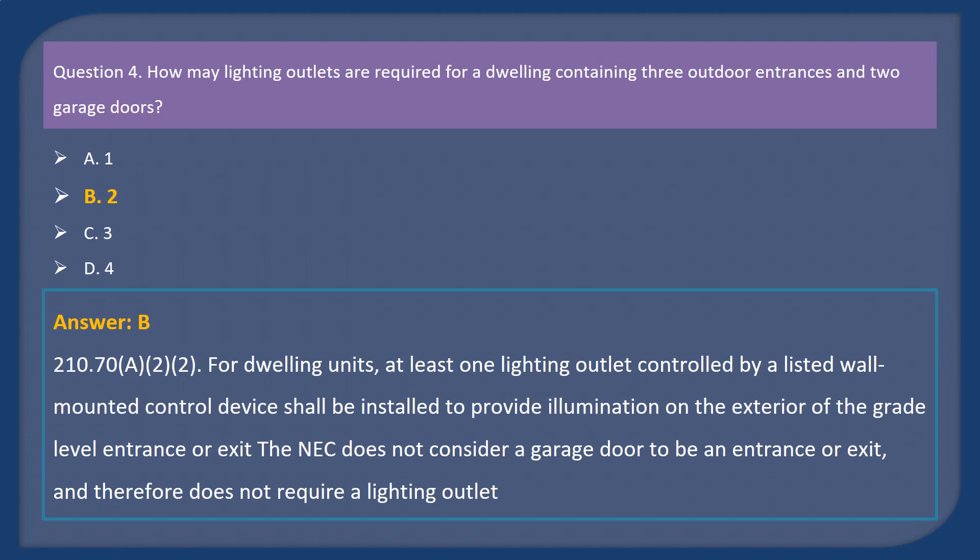Answer: B. Explanation. 210.70A2. For dwelling units, at least one lighting outlet controlled by a listed wall-mounted control device shall be installed to provide illumination on the exterior of the grade-level entrance or exit. The NEC does not consider a garage door to be an entrance or exit, and therefore does not require a lighting outlet.